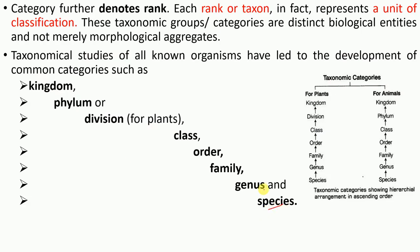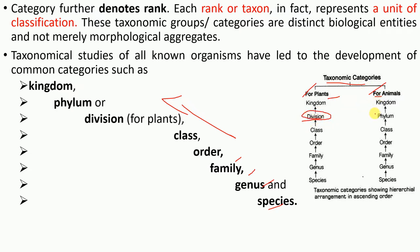We will see species, genus, family, and order in detail in just a few seconds. I want you to pause this video and see the basic difference between taxonomic categories for plants and for animals. There is a minor difference: for animals you use the word 'phylum,' and for plants you use the word 'division.'